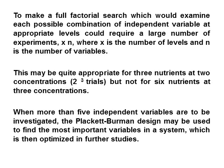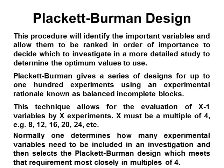A factorial search would examine each possible combination of independent variables at appropriate levels, and could require a large number of experiments — x raised to n, where x is the number of levels and n is the number of variables. This may be quite appropriate for three nutrients at two concentrations (2 raised to 3 trials), but not for six nutrients at three concentrations. When investigation involves more than five independent variables, the Plackett-Burman design is used to find the most important variables in a system, which is then optimized in further studies. Different combinations and sequences of process conditions need to be investigated to determine the growth conditions which produce the biomass with the physiological state best constituted for product formation.